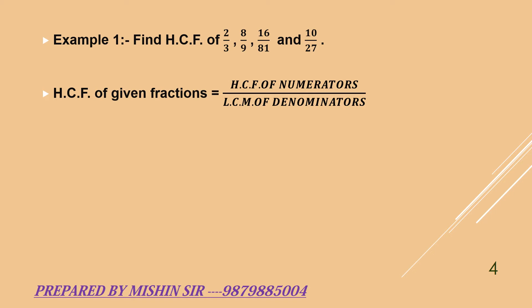Now we find HCF of numerators: 2, 8, 16, and 10. HCF is 2. Now we find LCM of denominators: 3, 9, 81, and 27. LCM is 81. Now we substitute these values in the given formula. So HCF of given fractions is 2/81.